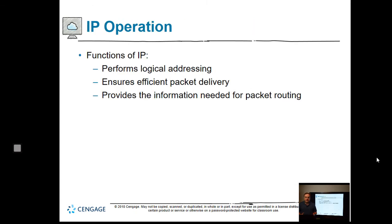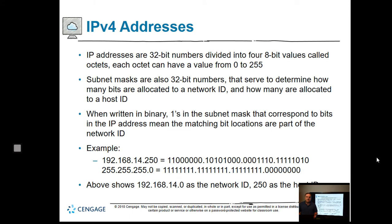So what's the function of IP? IP is a protocol — TCP over IP are two protocols that just happen to work together. The IP protocol performs logical addressing, ensures efficient packet delivery, and provides information needed for packet routing. If you have a router, it's going to route IP. IP addresses in TCP/IP version 4 are 32-bit, meaning 2 to the 32nd power — just over 4 billion addresses, which we've used all up. They're divided up into four 8-bit values.